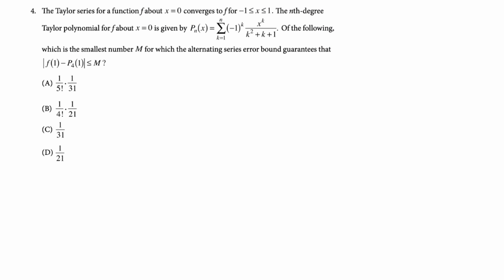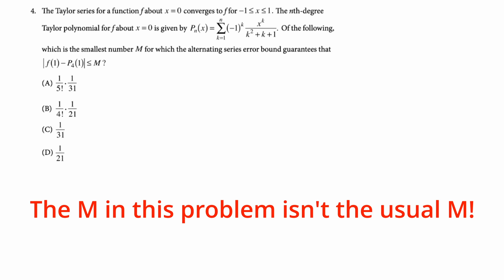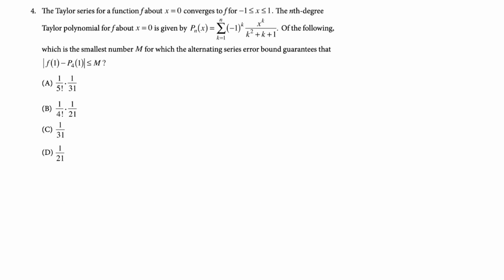Number four, the Taylor series for a function f about x equals zero converges to f for negative one to one. The nth degree Taylor polynomial for f about x equals zero is given by p n of x equals the sum from k equals one to n negative one to the k x to the k over k squared plus k plus one. Of the following which is the smallest number m for which the alternating series error bound guarantees that the absolute value of f of one minus p four of one is less than or equal to m. This problem is a little confusing because it uses m in a context that we are probably not associating it with. I tend to think of m as the Lagrange error bound kind of constant that we need to find. That's not the case here. Instead m is just the error. So I do think this problem is easier to do than it is to think about.